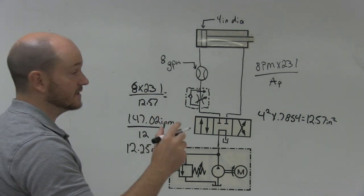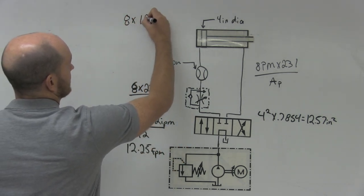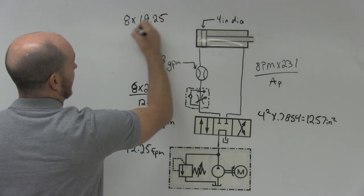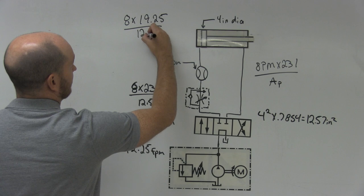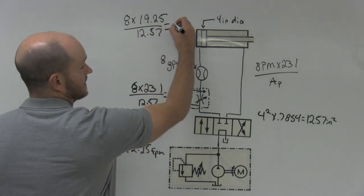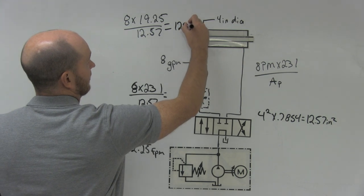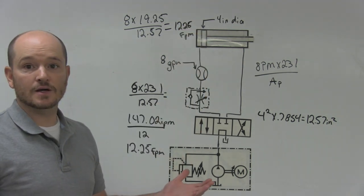Or, you could run it through this formula here. 8 times 19.25 divided by, again, the area, which was 12.57. So this answer would still come out to be 12.25 feet per minute. And this is how you calculate it out.